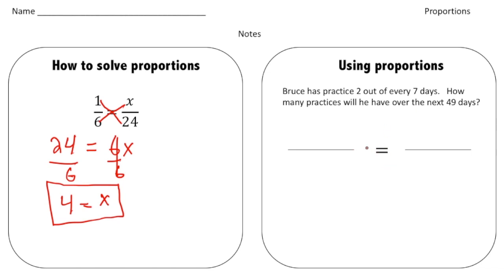So the hard thing about this is setting up your ratios. The solving part I think is pretty easy. So we know that Bruce has two practices out of every seven days. So that's going to be a ratio, right? So it's going to be two practices for every seven days.